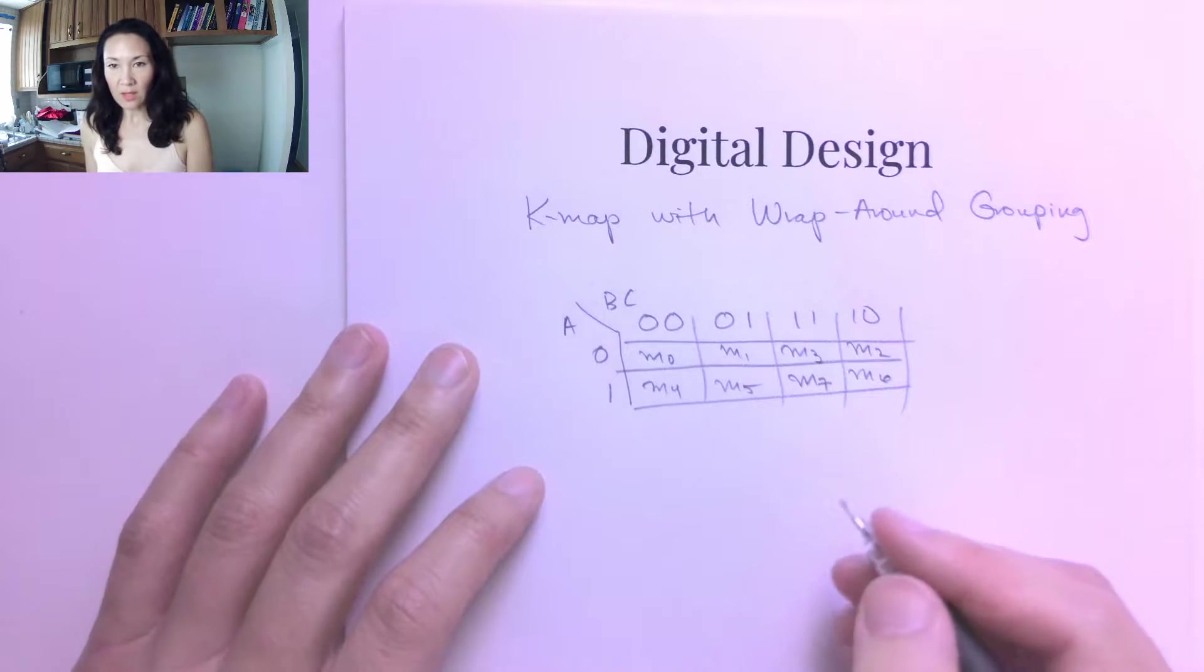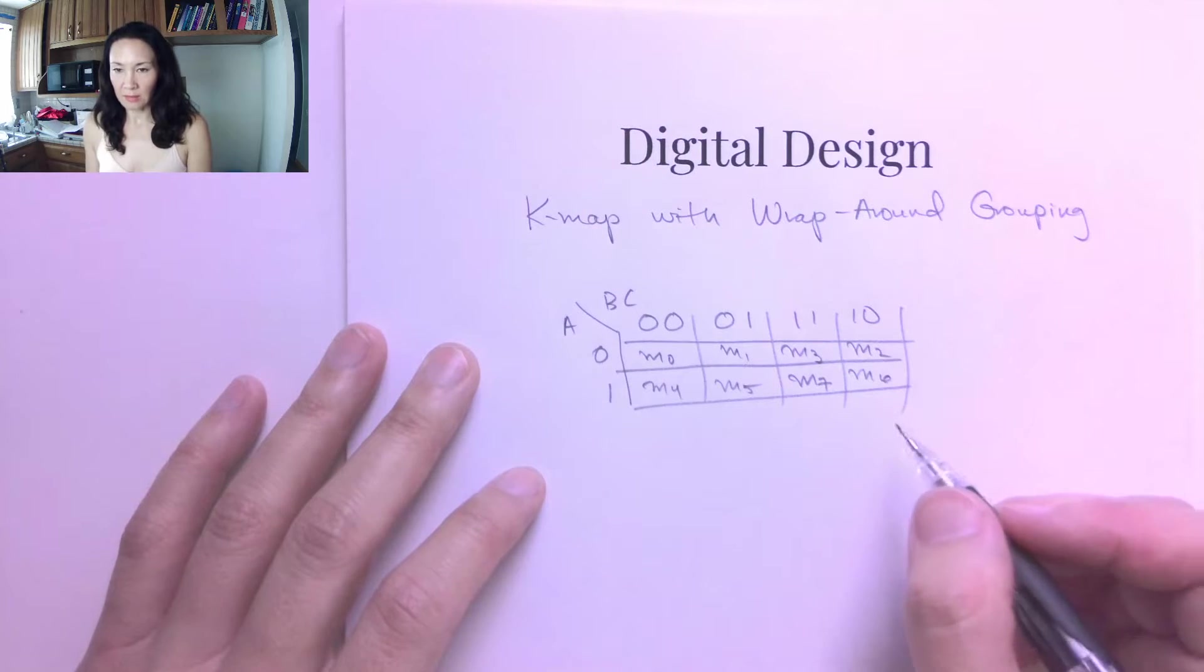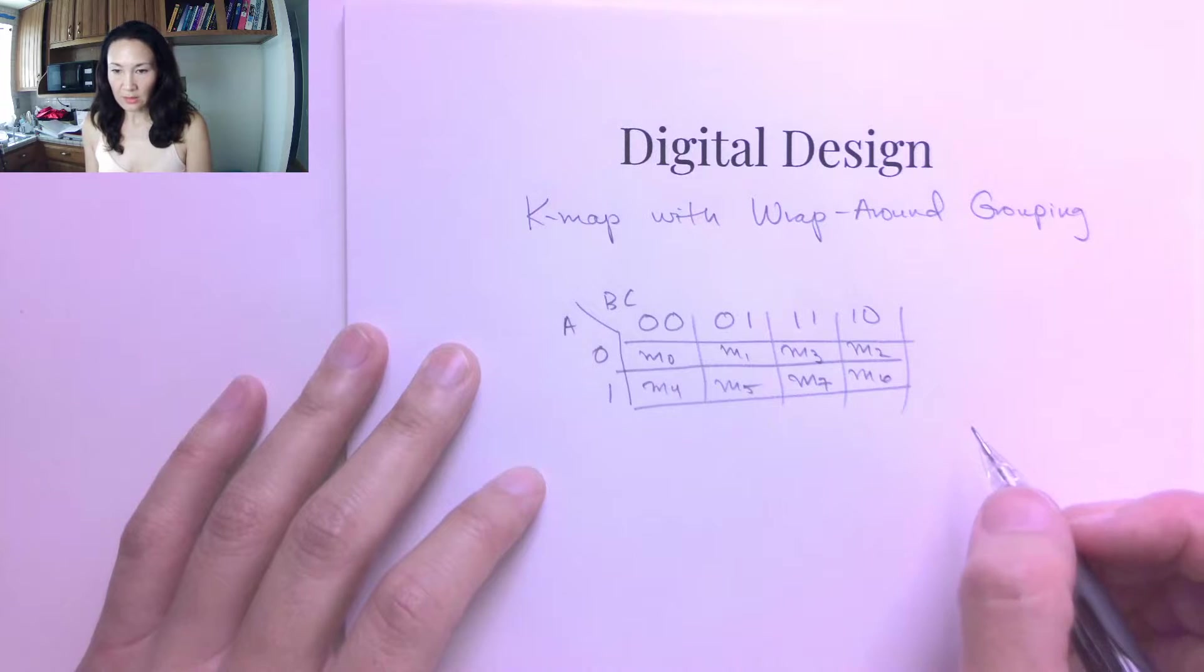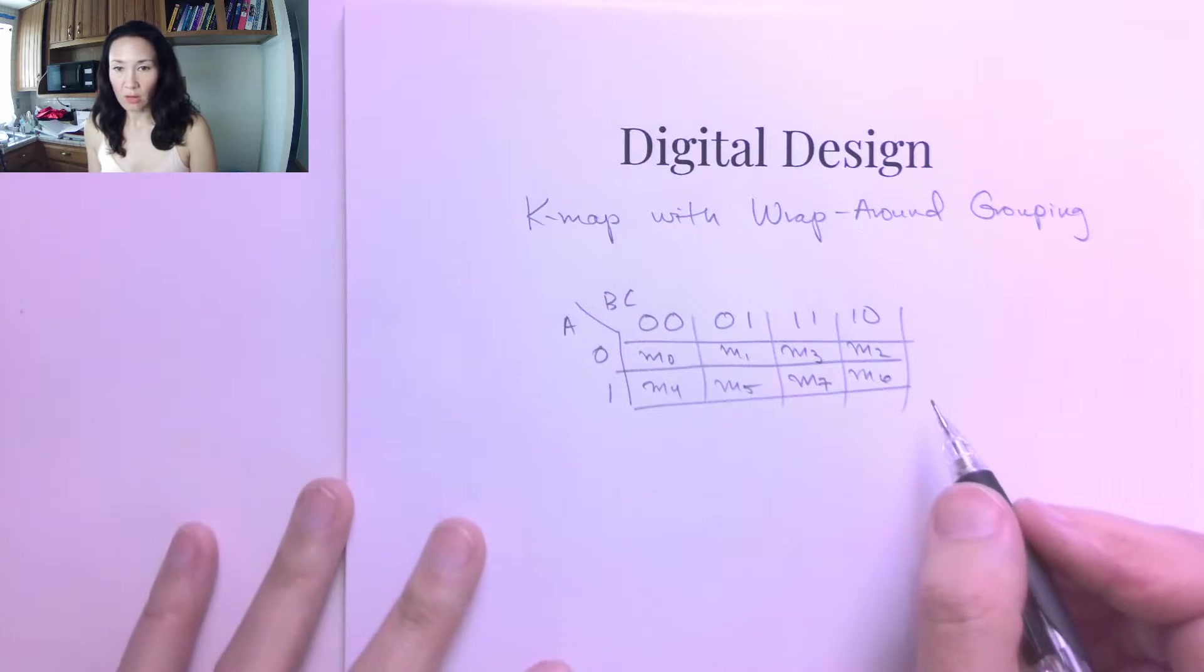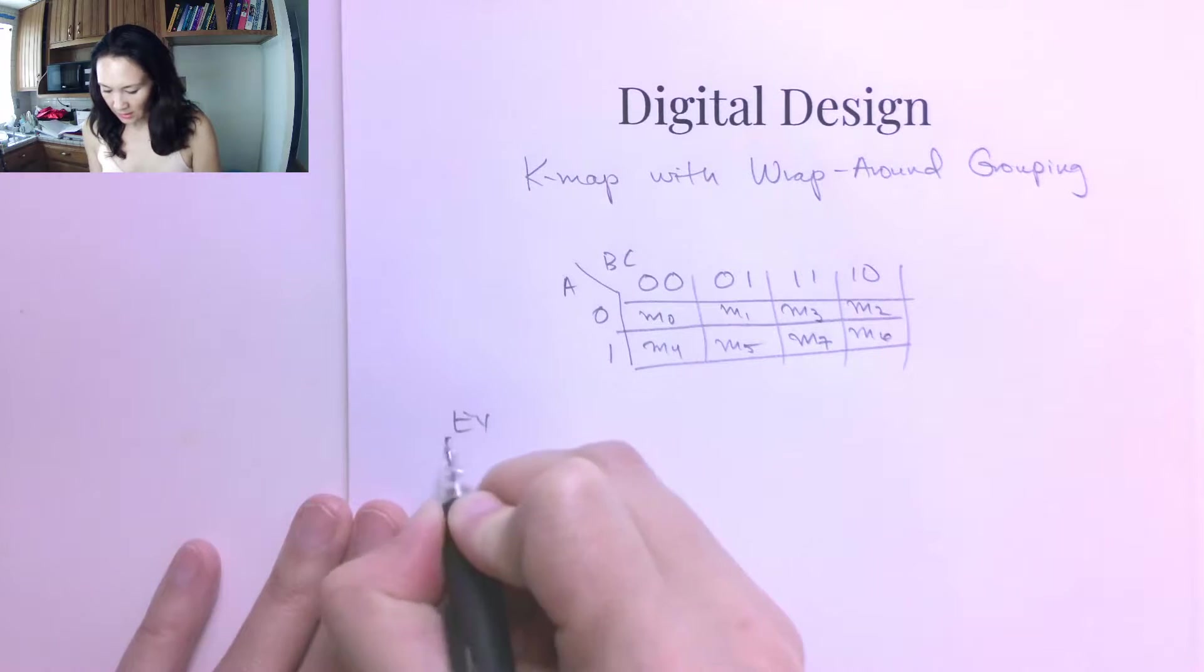So that means if we're given a function in minterm expanded form, or sum of minterms, then we can easily just put it in the correct cell in our Karnaugh map. So let me show you an example.